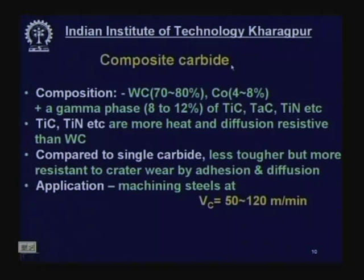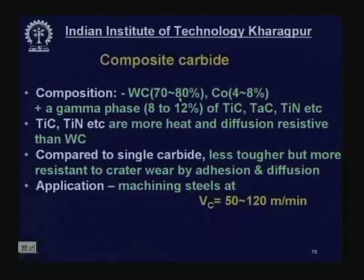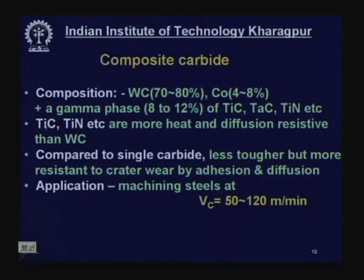Composite carbide was another breakthrough — suitable for steels. Compared to single carbide, tungsten carbide content is reduced to 70–80%, cobalt reduced to 4–8%, and the remainder — 8–12% — is a gamma phase consisting of titanium carbide, tantalum carbide, titanium nitride, hafnium nitride, hafnium carbide, and similar materials.